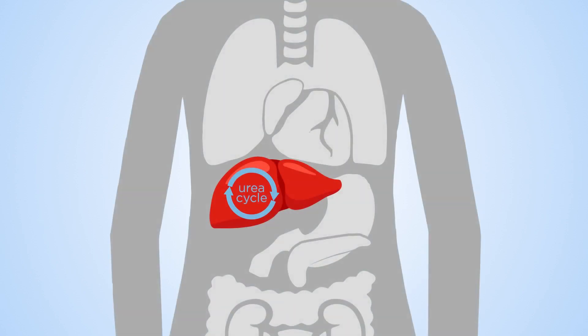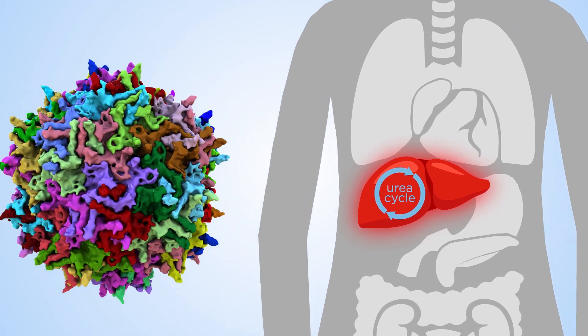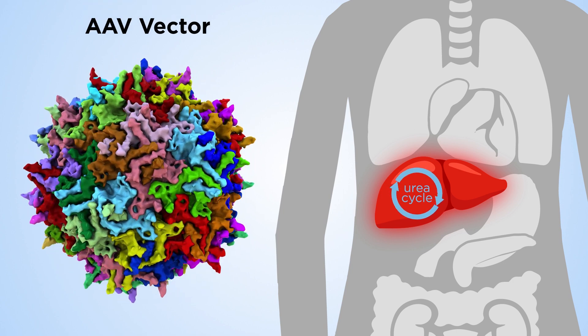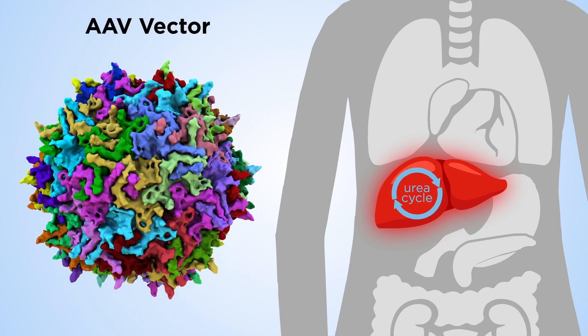It's important that the genes are delivered to the specialized liver cells accurately. The leading vector candidates to deliver gene therapy to liver cells are called adeno-associated viral vectors, or AAV vectors.